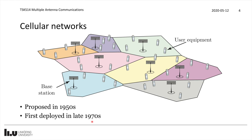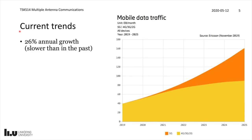Let's look at the current trends when it comes to mobile data traffic in cellular networks. The source here is the Ericsson Mobility Report from November 2019, which provides an estimate of how much data is transmitted in the world in 2019 — around 40 exabyte per month — and then it's predicted to increase over the years.